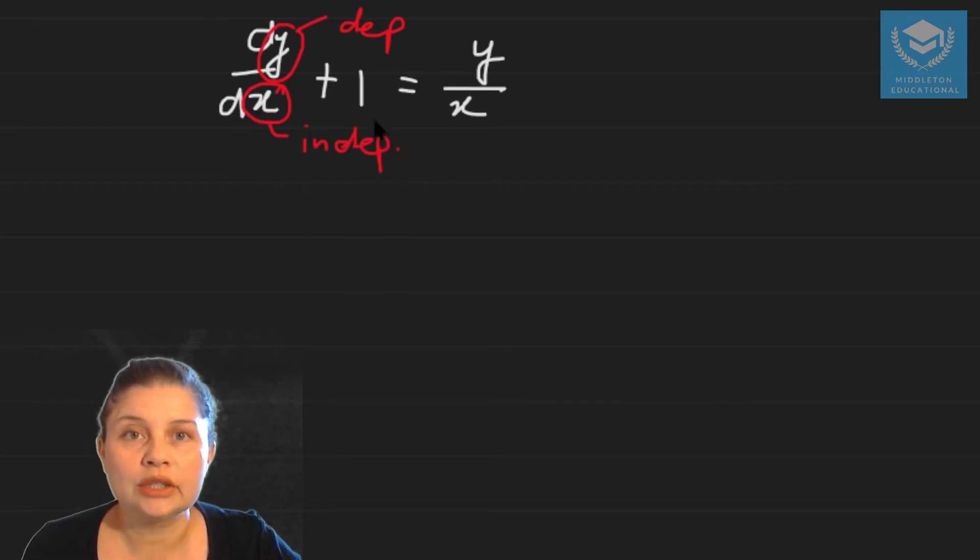If you look at the rest of the equation you have a mixture of dependent and independent variables which means you cannot use direct integration.